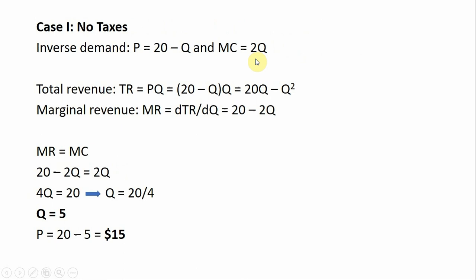We're going to do standard profit maximization here. We can calculate total revenue, TR, as price times quantity. The price is given to us as 20 minus Q, so substituting in, we get 20 minus Q all multiplied by Q, which simplifies to 20Q minus Q squared.